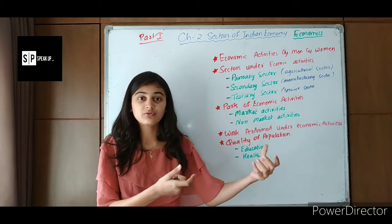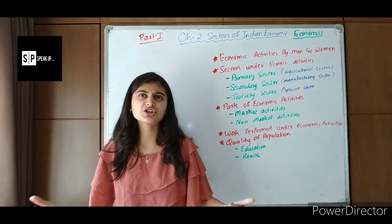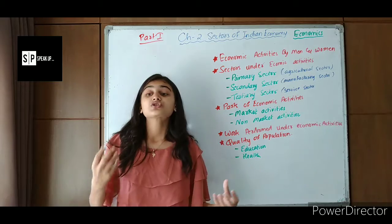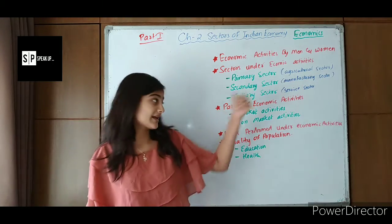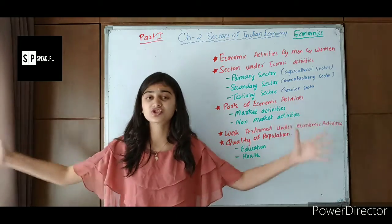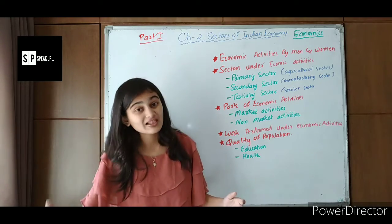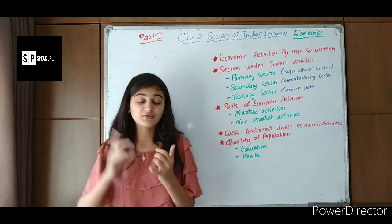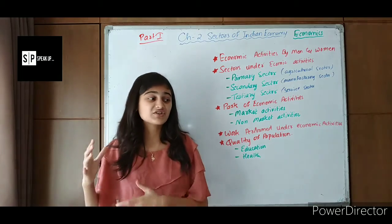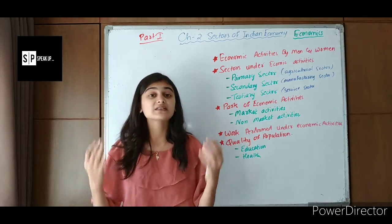We cannot use crops directly — they need to be polished and separated from stones or impurities. That manufacturing work is done by the secondary sector. Once finished goods are produced, they need to be transported from one place to another, advertised, and sold. All activities such as advertisement, transportation, insurance, and banking — which are not related to production or manufacturing — are included in the tertiary sector.